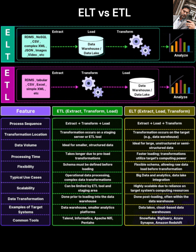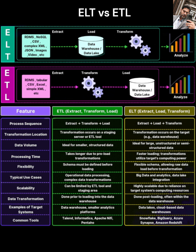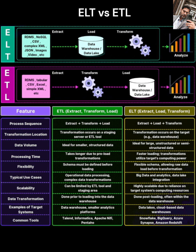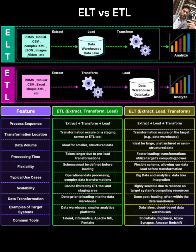ETL and ELT are essentially two different sequences for getting data from its source into a destination like a data warehouse or data lake, ready for analysis. They both involve three key steps: extract, transform, and load. The difference is the order. ETL stands for extract, transform, load. And ELT stands for extract, load, transform. Let's break down what each step means and how the order changes everything.